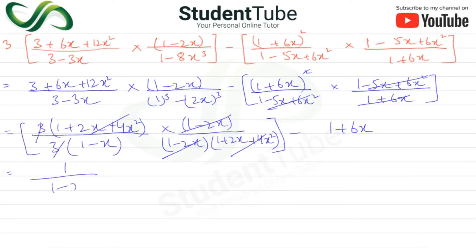1 upon 1 minus x, then minus 1 plus 6x. There is nothing below, that means it is 1. If we take LCM, it is 1 minus x.